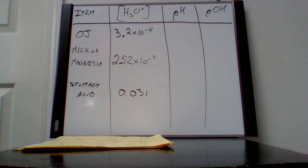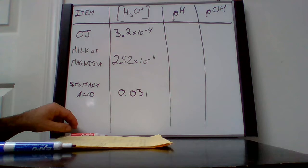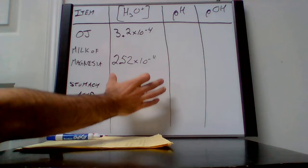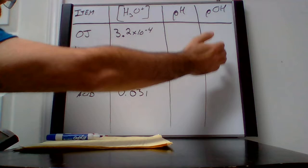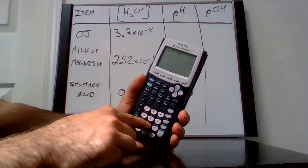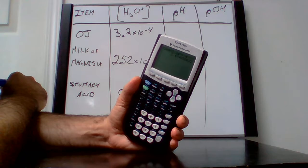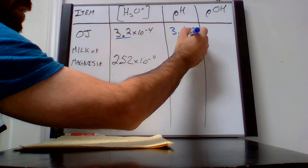The next chart shows three items and we want to find the pH and pOH from each H3O+ concentration. Starting with orange juice, which has a concentration of H3O+ at 3.2 times 10 to the negative 4. We use the negative log of these values to get pH, then find pOH by doing 14 minus pH. For orange juice, the negative log of 3.2 times 10 to the negative 4 gives 3.49.